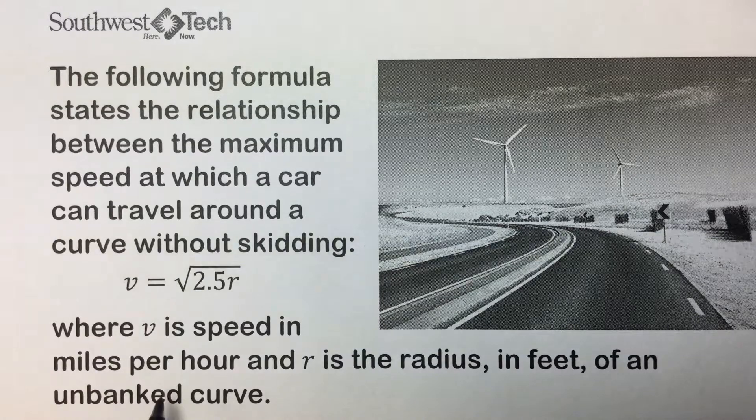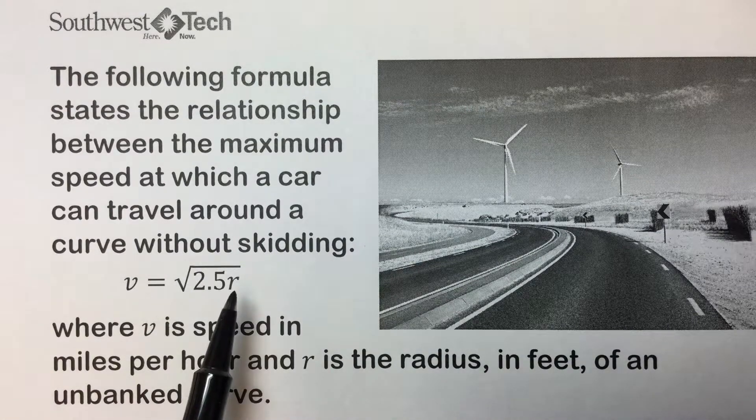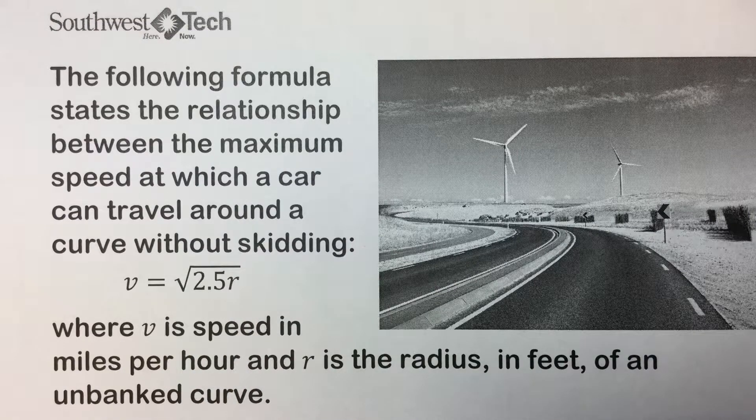V is the speed in miles per hour, and R is the radius in feet of an unbanked curve.